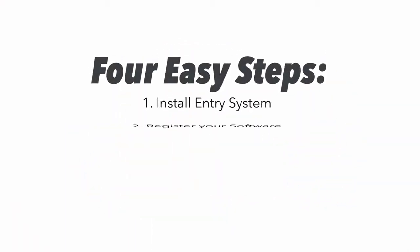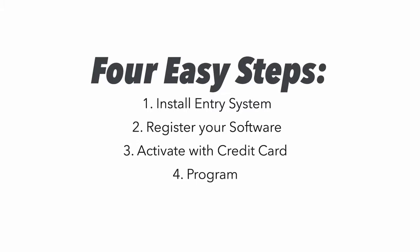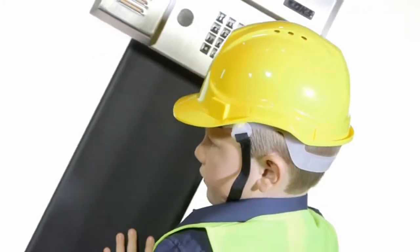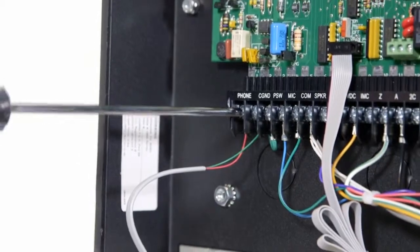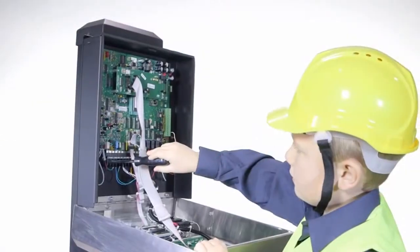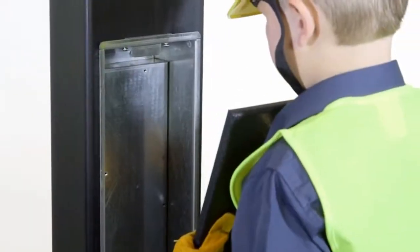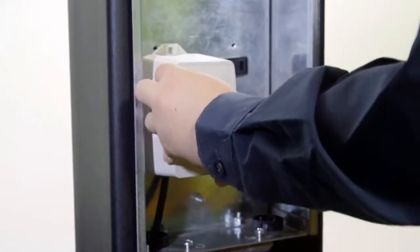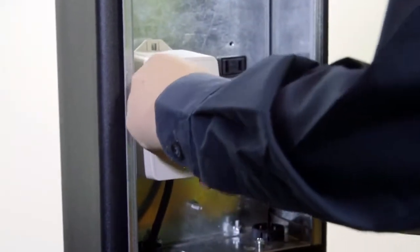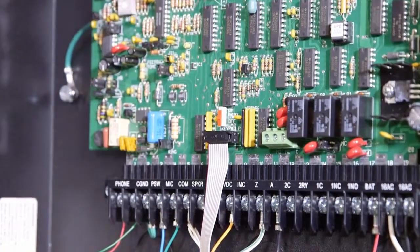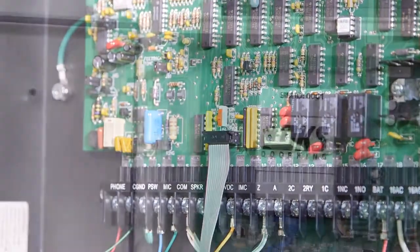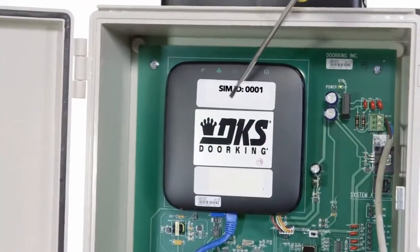Finally, you can easily set up and program your telephone entry system in just four easy steps. First, install your entry system, then hook up the phone and data lines between the operator and the cellular unit. Plug in the hardware. Set the four-digit master code on the operator and make a note of it. Also note the cellular SIM ID number.